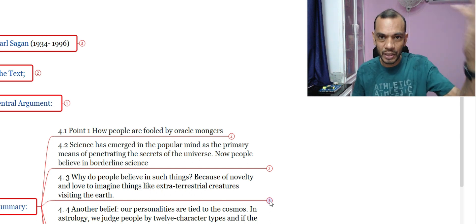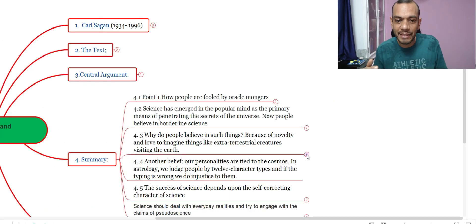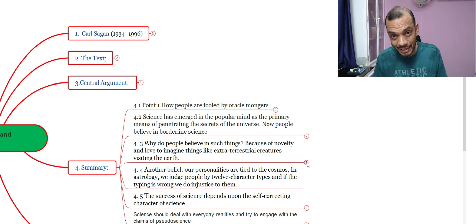These two examples show how oracle mongers exploit people. People are interested in novelty and they like to imagine things. In the essay, there are extraterrestrial creatures, aliens.